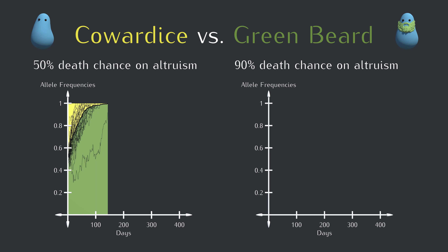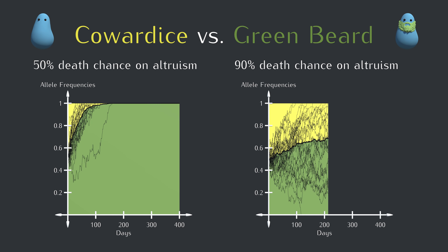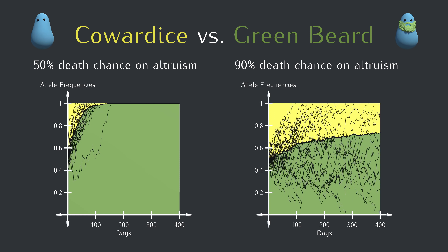At the 50% death chance, it seems like our first run wasn't a fluke — the green beard allele does indeed have a massive advantage. One of the runs got a pretty rough start, but it still ended up taking over before too long. At 90%, things are pretty noisy. Only 10% of the acts of altruism actually end up saving an extra blob, so the random fluctuations are pretty dominant. And even though the average shows an upward trend, the green beard allele does go extinct in several runs.